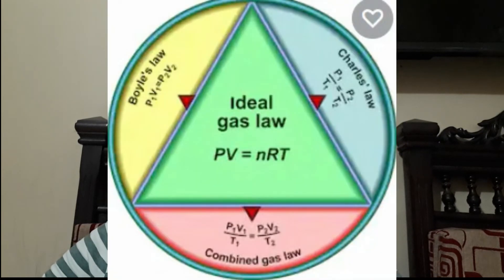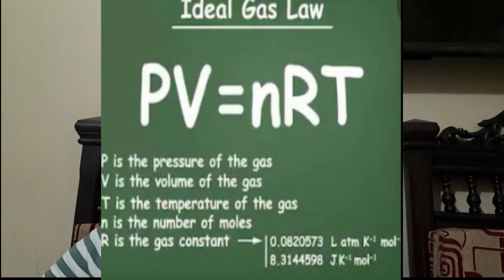That equation is PV = nRT, where R is a constant called the gas constant. We can calculate the value of R in two units. If pressure is in atm, temperature in Kelvin, and volume in dm³, the value of R is 0.0821. If we change the volume to m³ and pressure to Pascals, the value of R is equal to 8.314. This value is always constant.